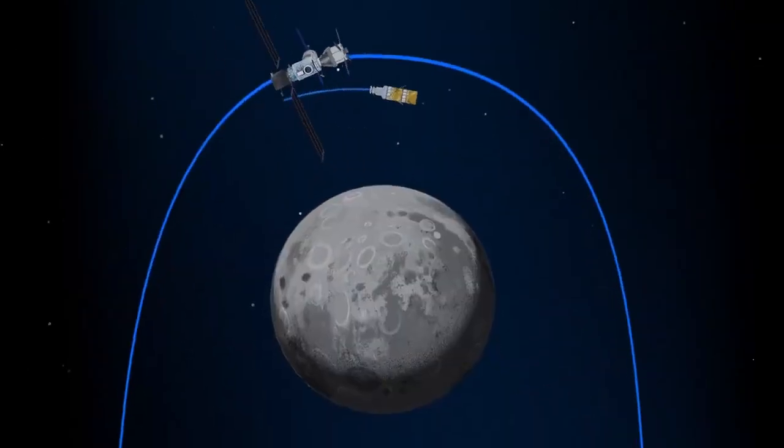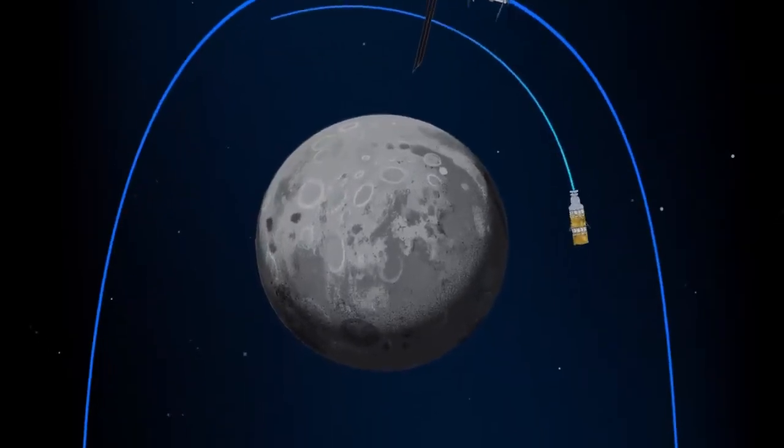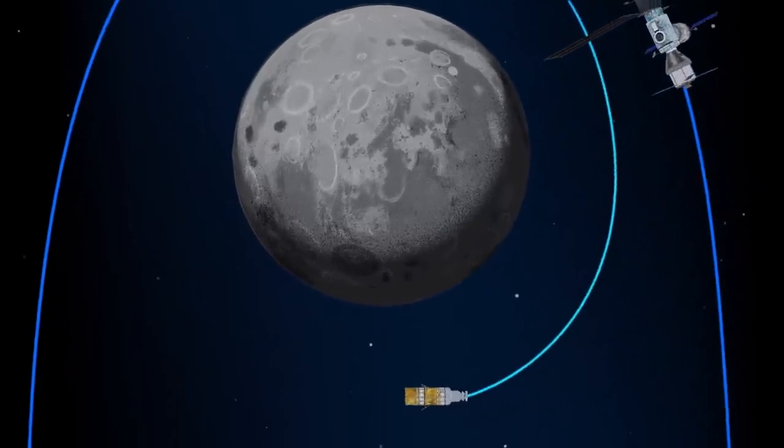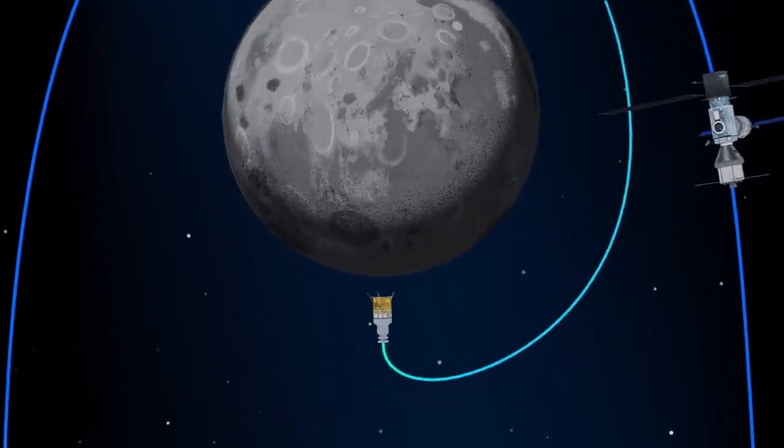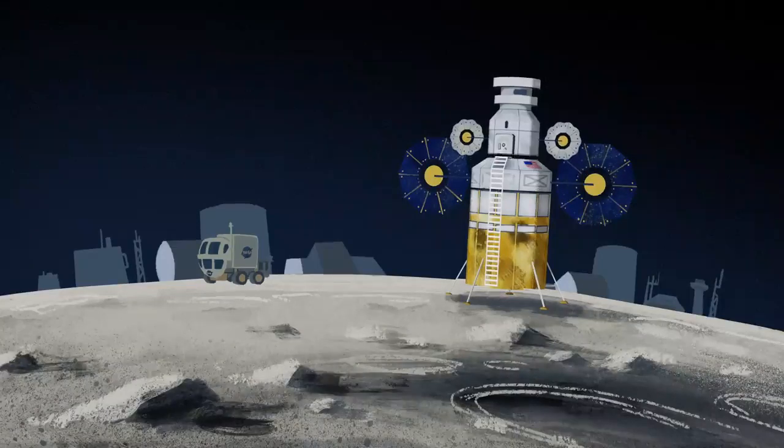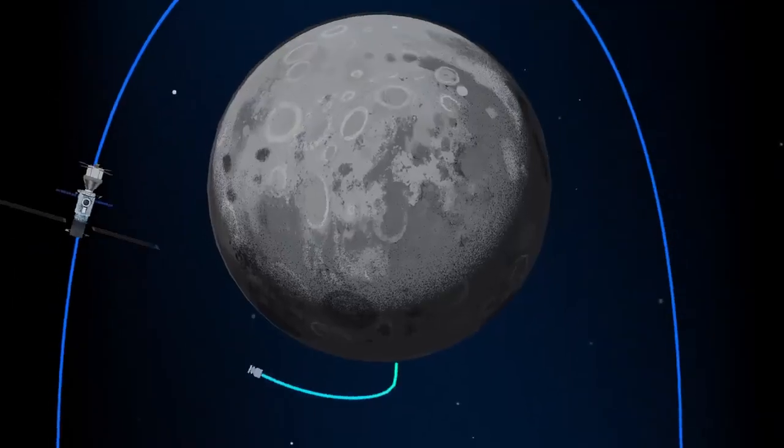The lunar lander system itself is built for three unique steps: descending from the halo orbit of Gateway down to a low lunar orbit, descending from low lunar orbit to the surface, and once the lunar mission is complete, launching from the surface of the Moon and ascending all the way back to the orbiting Gateway.